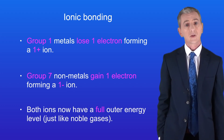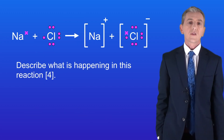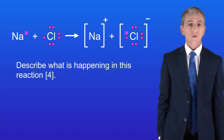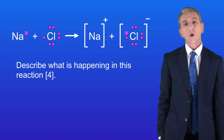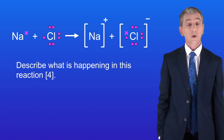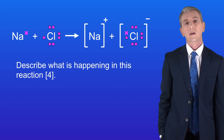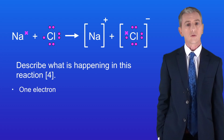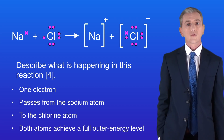Now one final point: we often see exam questions like this, showing the reaction between sodium and chlorine, asking us to describe what's happening for four marks. One key point is that we're only shown the outer energy levels, because these are the ones we're interested in. So if we're describing this reaction, we would say that one electron passes from the sodium atom to the chlorine atom, and both atoms achieve a full outer energy level.